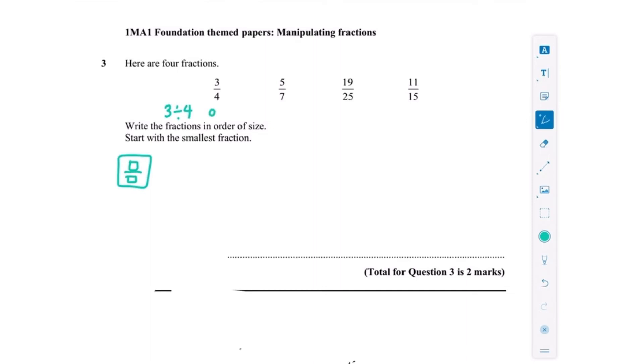5 divided by 7, or 5 over 7, that is 0.714. 19 divided by 25 is 0.76, and 11 over 15 is 0.73 recurring. I just want to make them all the same length, so I'm going to make sure they've all got three decimal places like that. Then it's a lot easier for us to compare each of them.